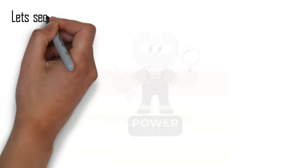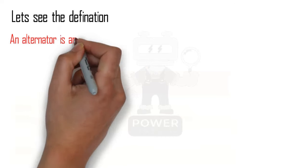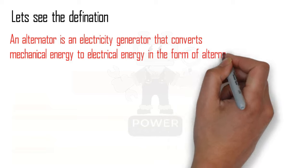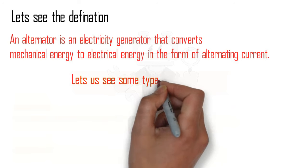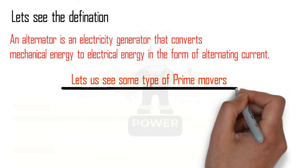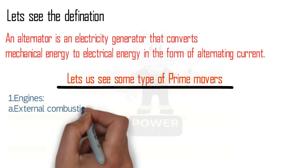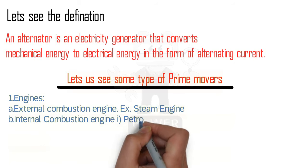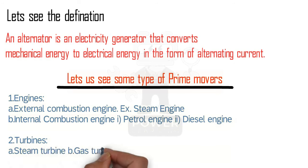An alternator is an electricity generator that converts mechanical energy to electrical energy in the form of alternating current. Now let's see some types of prime movers. Prime movers are the mechanical power — the mechanical force which is coupled with the alternator. This mechanical source rotates and our alternator is coupled with this prime mover.